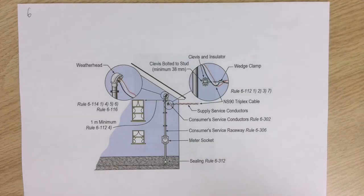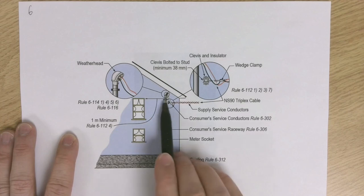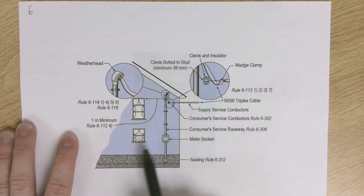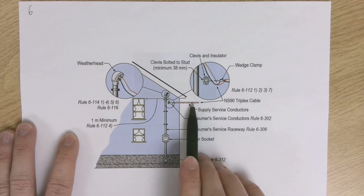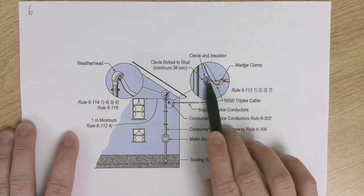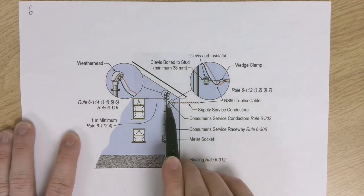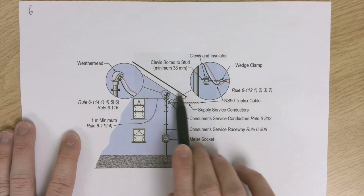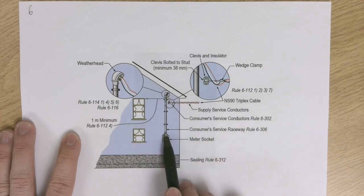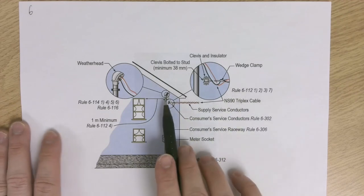Going back to a service raceway: we just have regular strapping all the way up to the weatherhead. The triplex cable, which has a bare neutral in the middle and two live conductors, is now attached to the structure — attached to the house. Because this raceway, which is below the roof line, is attached to the house, the cable is attached to the house. So this cable is not applying force to the service raceway.